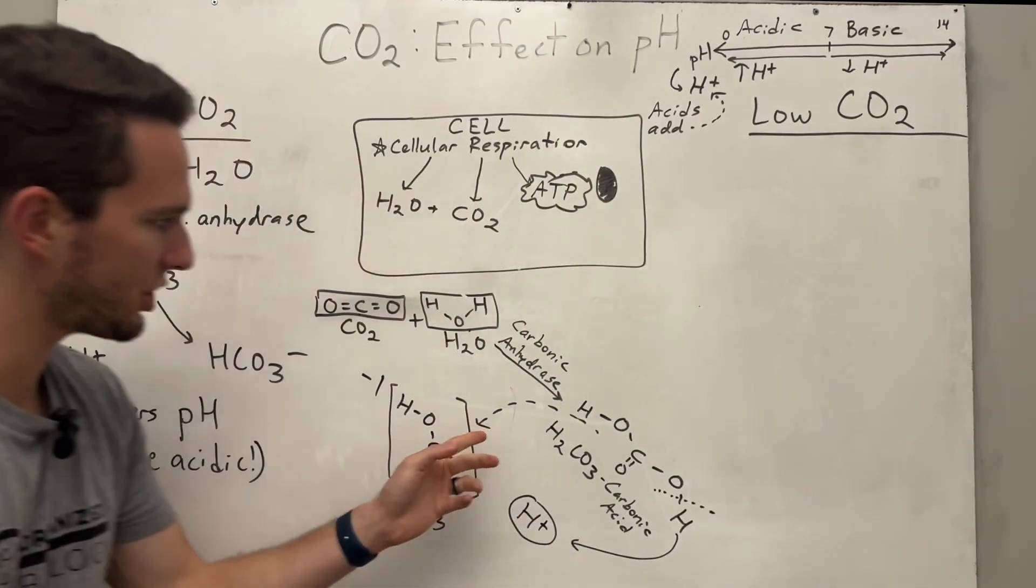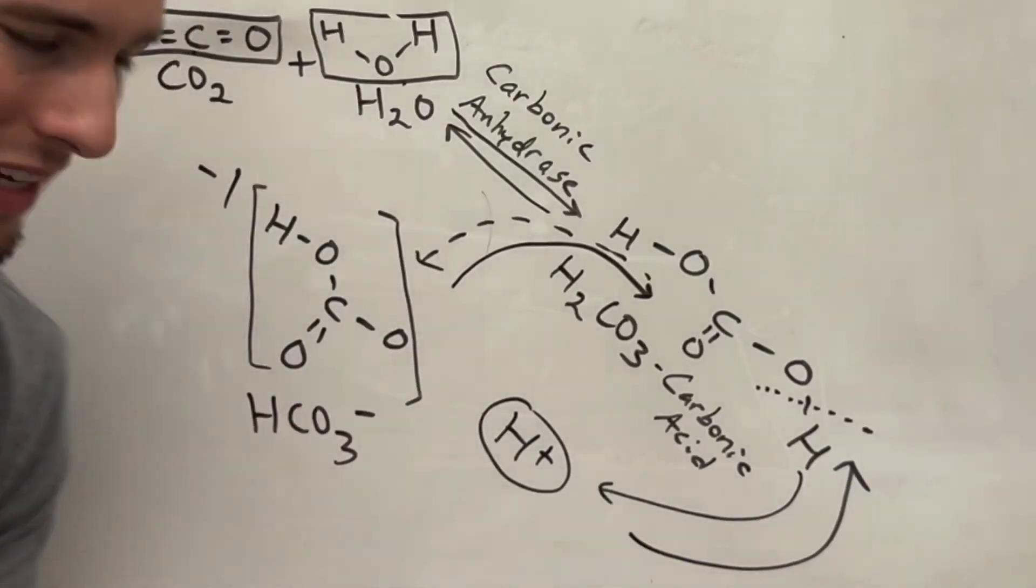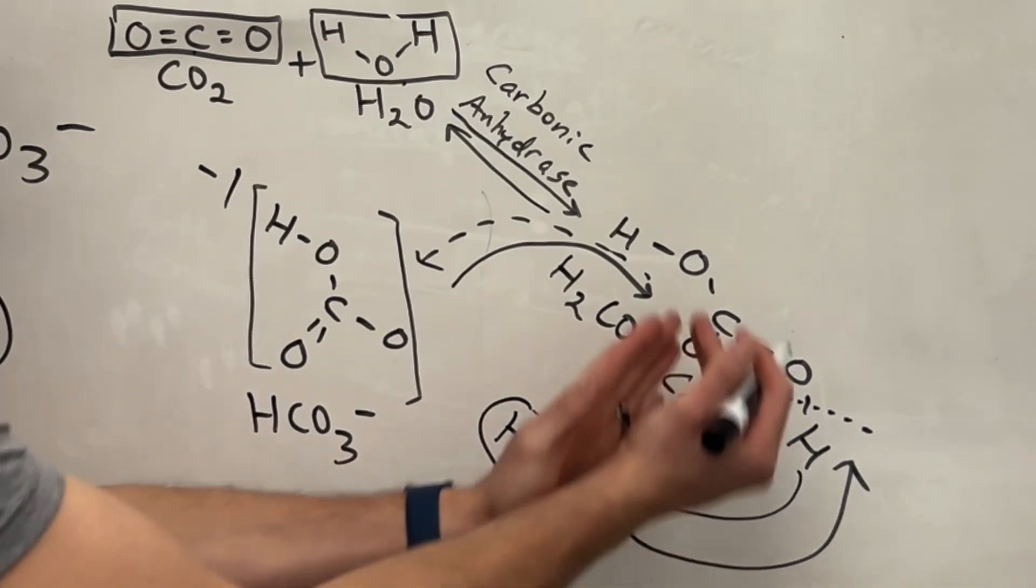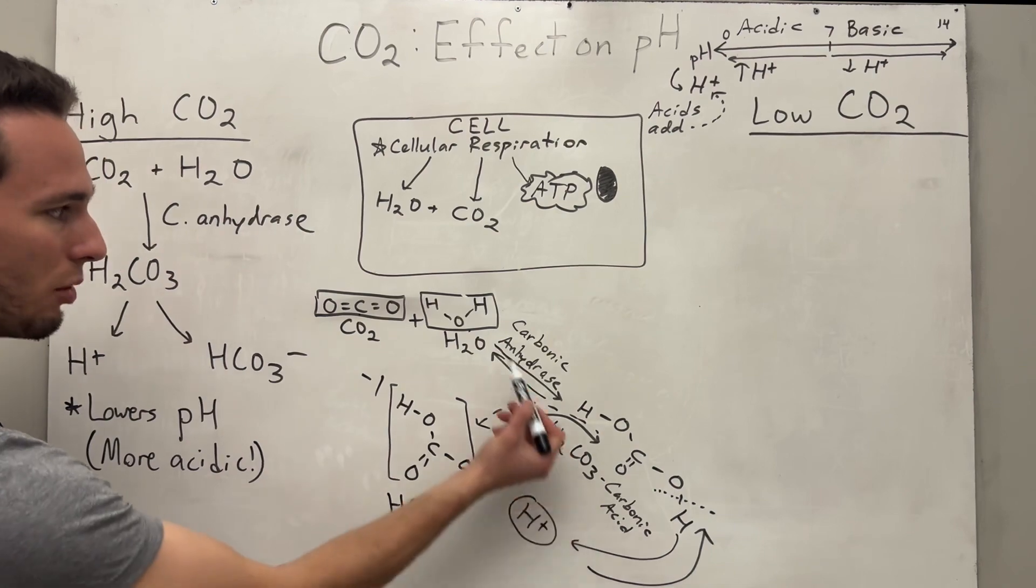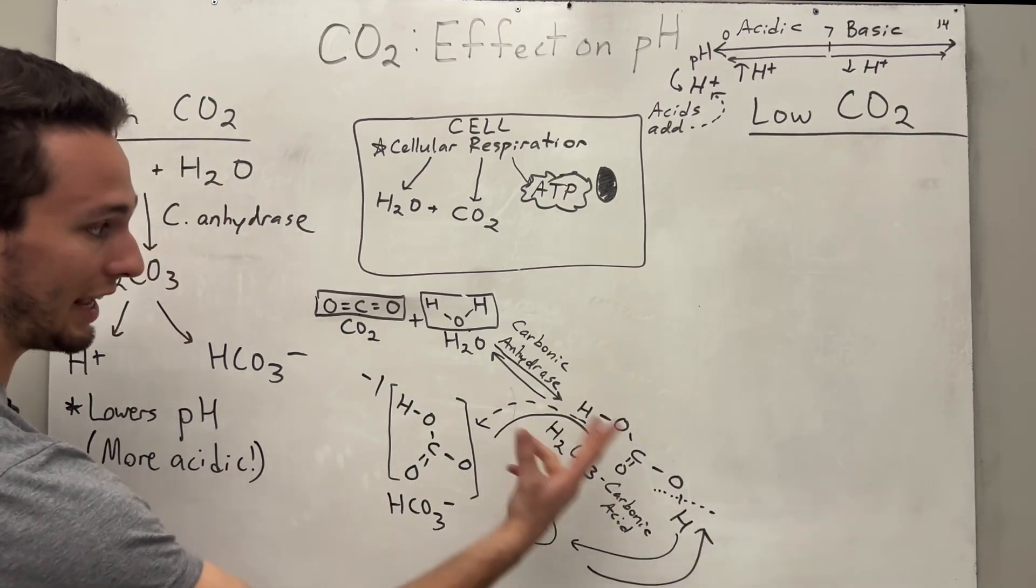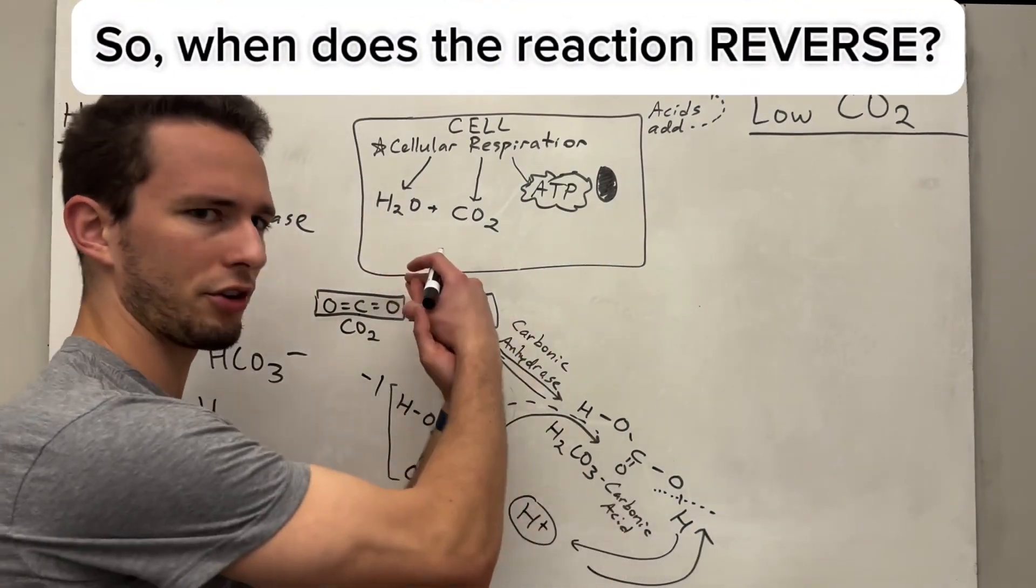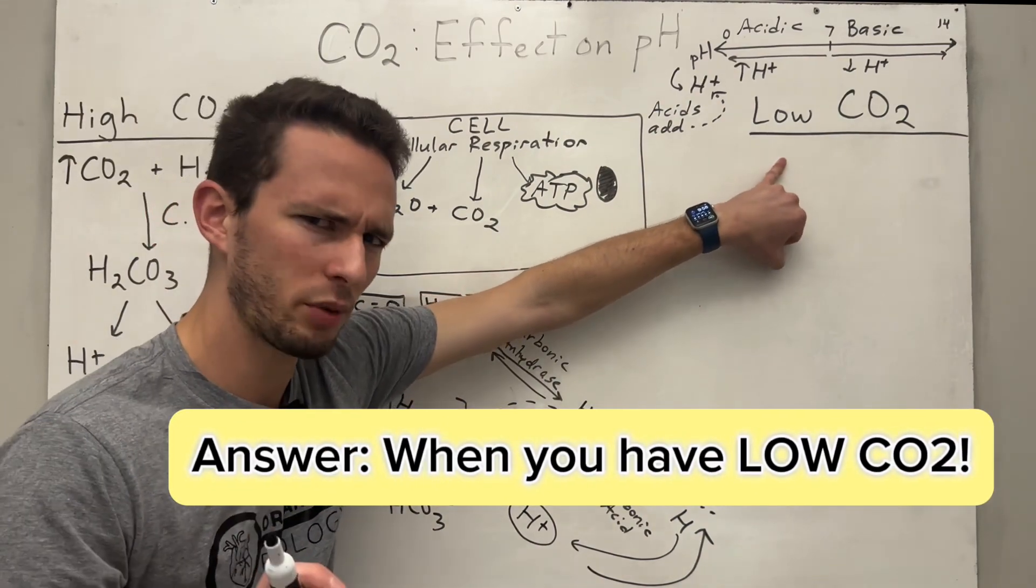One thing I didn't tell you about this reaction is that it is actually reversible. So that means sometimes we can actually take these two products and we can flip them and go the other direction. And in this case, your carbonic anhydrase would act as almost scissors because it'll take this molecule of carbonic acid and actually clip it apart and form CO2 and water again. So when does the reaction reverse the other direction? Well, check this out. It's when you have low CO2. Let me show you what I mean by this.